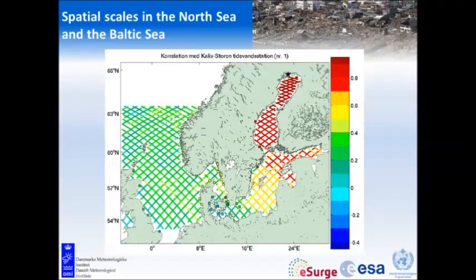Then we look at correlation between tide gauges and satellite data. Starting in the Baltic Sea, you see long correlation scales there. Inside the Danish waters there are short correlation scales. As you go out into the North Sea, the correlation is along the coast because we have the sea level signal following the coast. In the North Sea, correlation scales are a couple of hundred kilometers along the coast but not so much out in the water, while in the Baltic Sea we have very long correlation scales of several hundred kilometers.